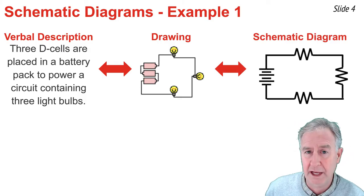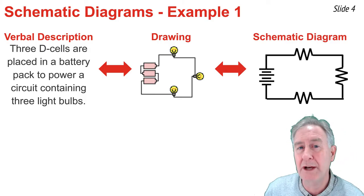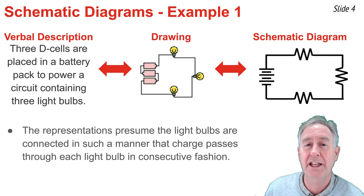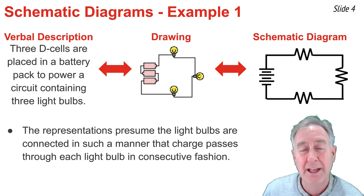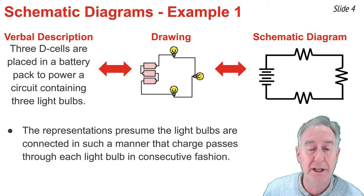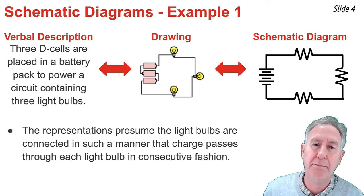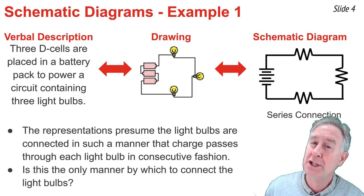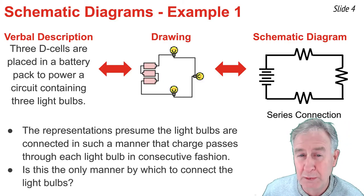In drawing it this way — both the diagram and the drawing — I presume something about those light bulbs: that they were connected so that any charge passing through the first light bulb would automatically pass to the second light bulb, and then through the third light bulb in a consecutive fashion. When you connect light bulbs like this, you've done what's called a series connection.